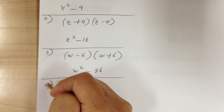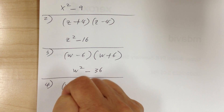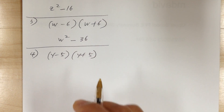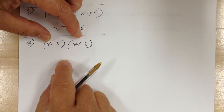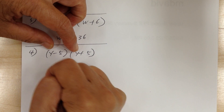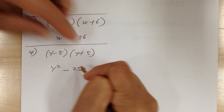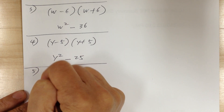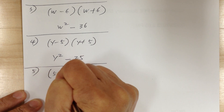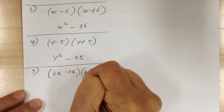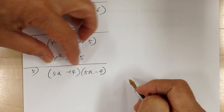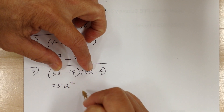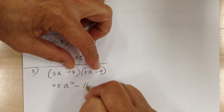Number 4: you have y minus 5 times y plus 5. First you have to make sure they are conjugates — check for conjugates — so this would be y squared minus 25. Number 5: you have 5a plus 4 times 5a minus 4. When you multiply, this will give you 25a squared minus 16.